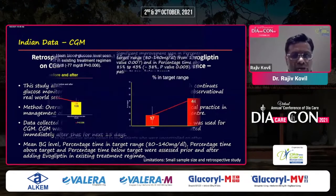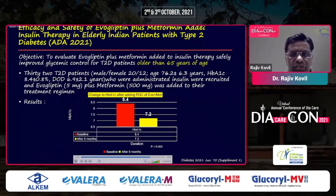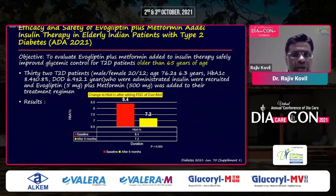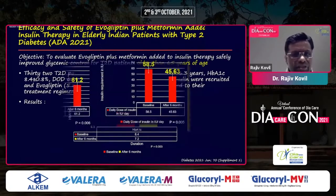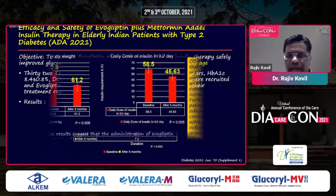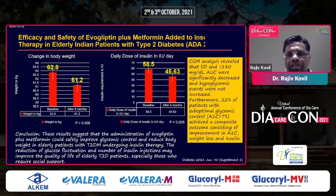The efficacy and safety of metformin added to insulin therapy with evogliptin, presented at ADN 2021, showed — in a smaller number of patients — an effective reduction in HbA1c at the end of 24 weeks.